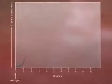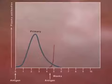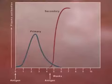The first time B and T cells are exposed to a specific antigen, the response takes weeks. If re-exposure occurs, B and T memory cells respond immediately to destroy the invader.